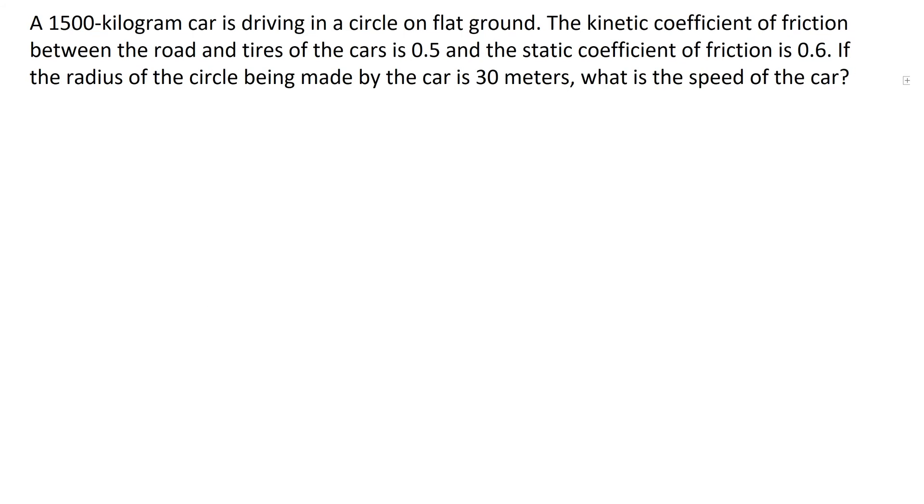All right, let's do another example. Here you have a 1500 kilogram car driving in a circle on flat ground. I'm going to draw a kind of top view or a bird's eye view of that. Just a car, and it's going in a circle which looks like a bean. There is a radius to this circle of 30 meters. And you were told the kinetic coefficient of friction between the road and the tires is 0.5. The static coefficient of friction is 0.6. If the radius is 30 meters, what is the speed of the car?